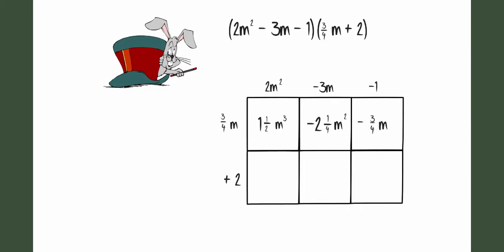Next, I'll be multiplying the trinomial by 2. That would give me 4m squared minus 6m minus 2. You notice that I have some like terms and that they are diagonal from each other in my array.